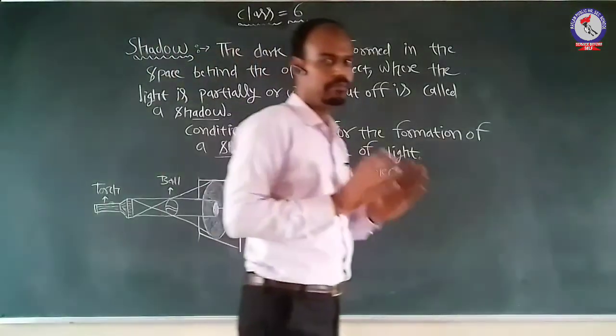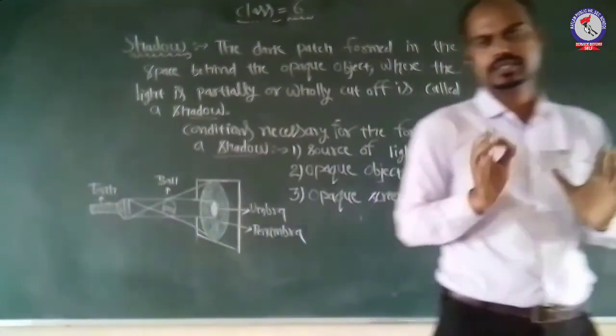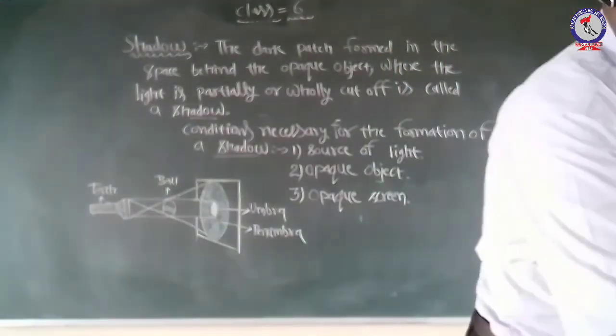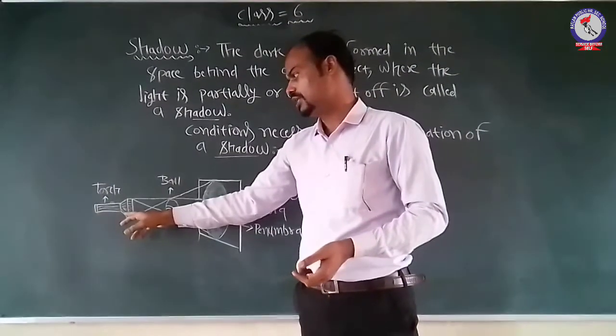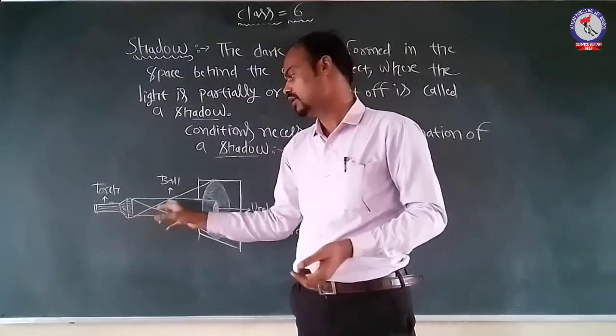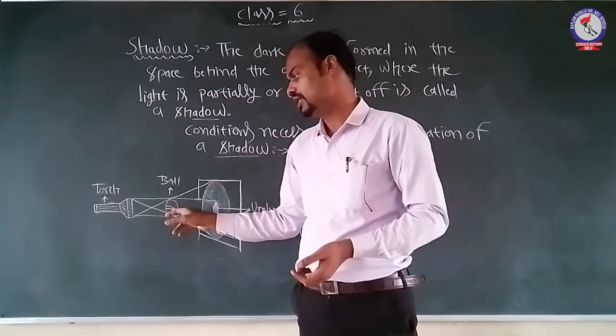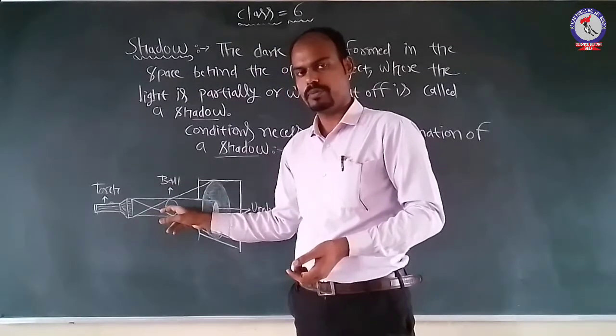If there is an opaque object, if there is a light in the path, it is going in the right direction. For example, this is a torch. A torch is a light source, and there is an opaque object.